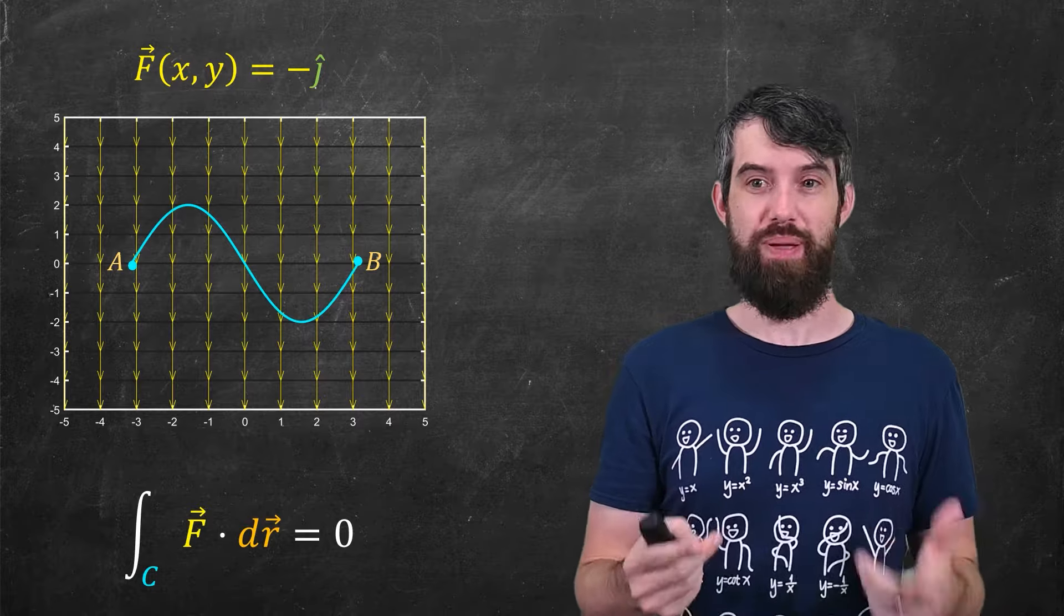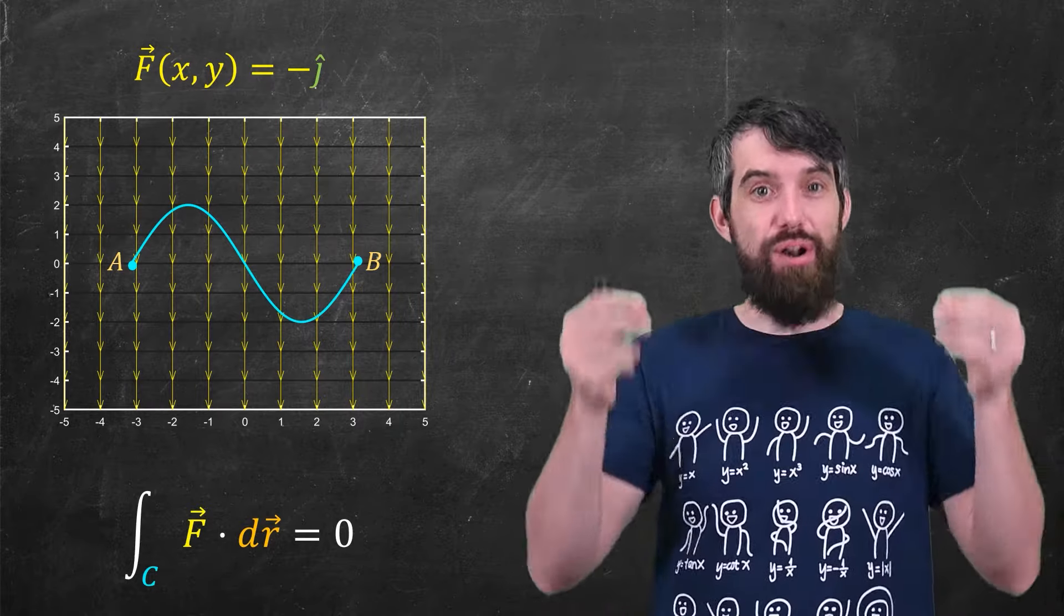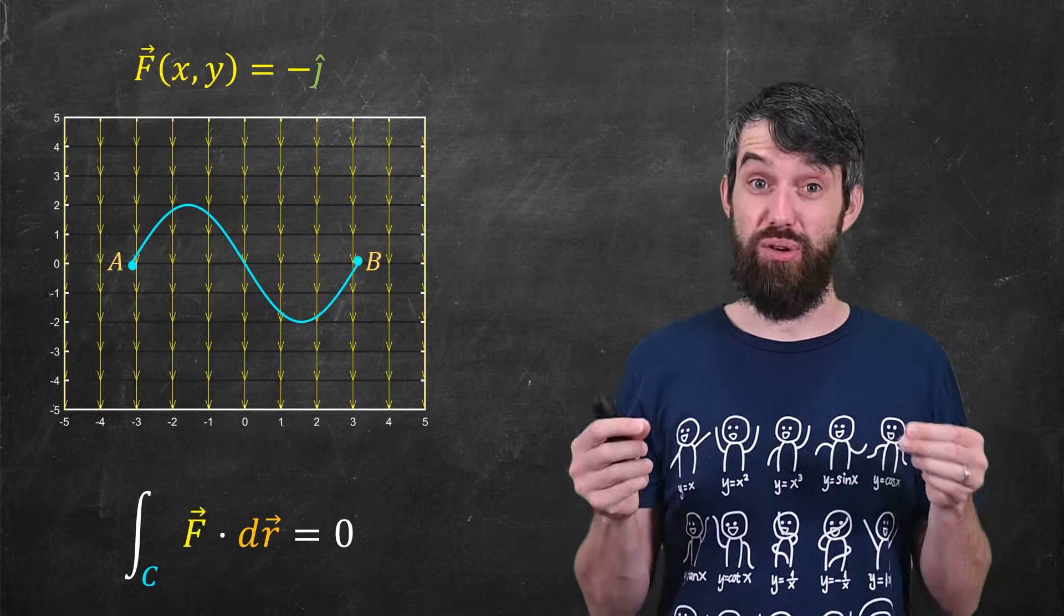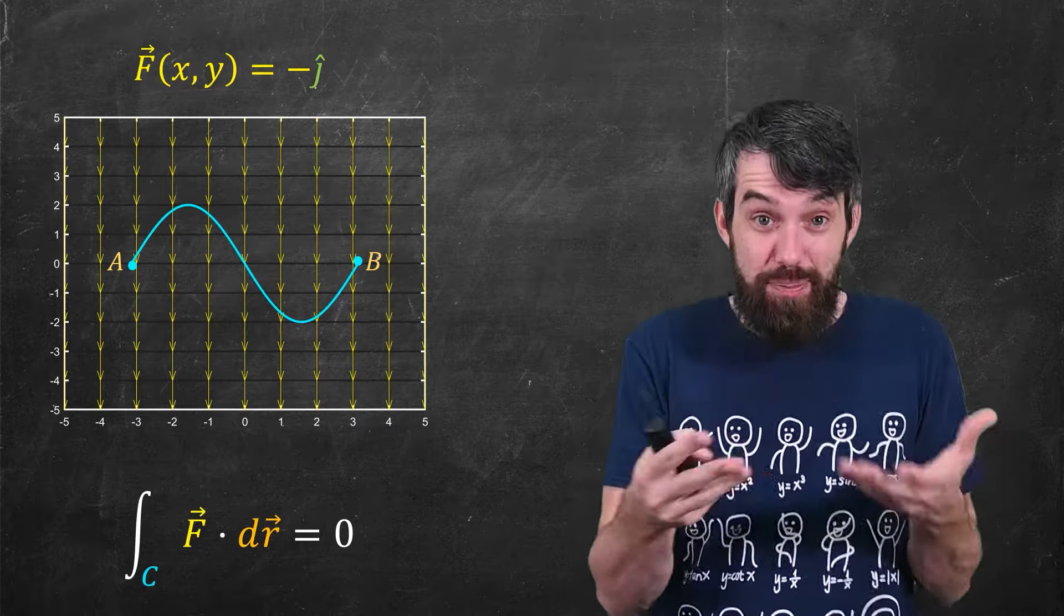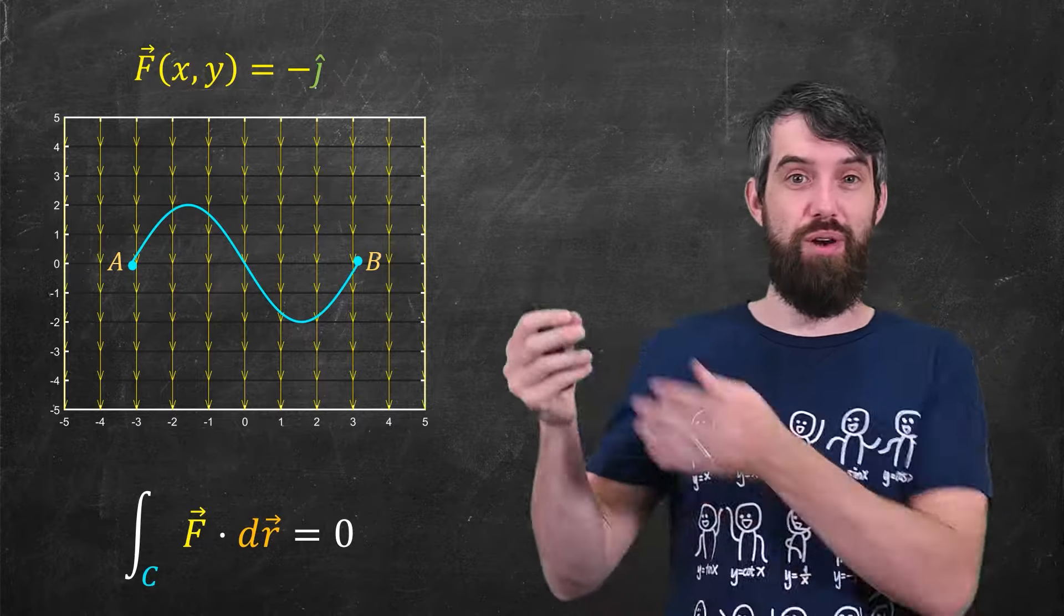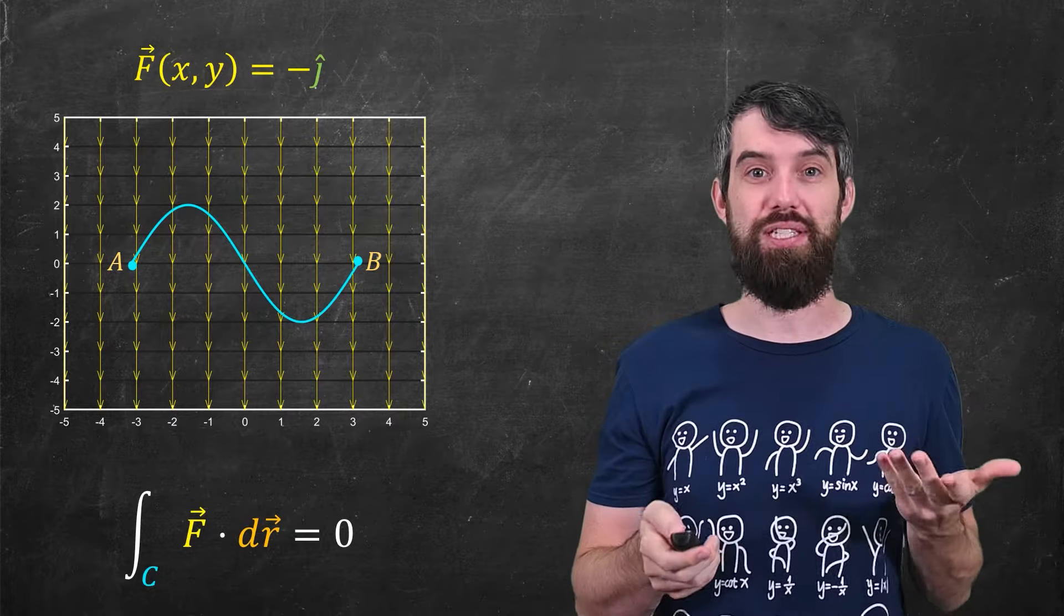So zooming back out to our picture, because the a and the b, they actually started at the same y value, they both started at zero the way I plotted it, that is that my h of a and my h of b is both zero. So in this specific example, the work done moving where I sort of take the ball up and down but leave it at the same height at the end is just zero.